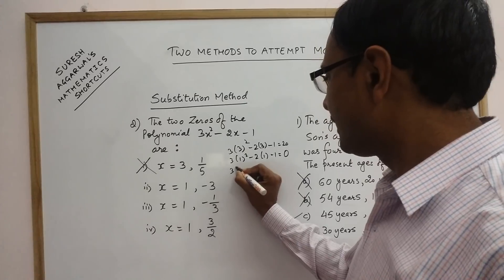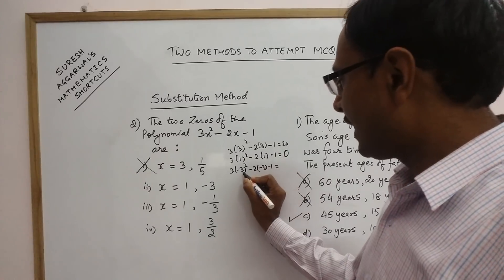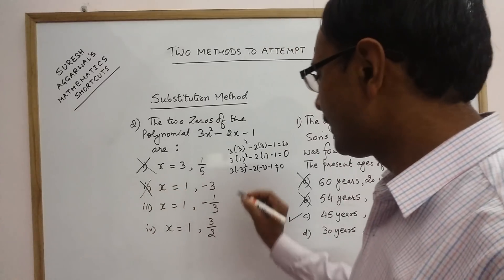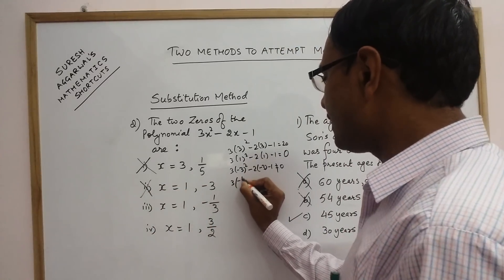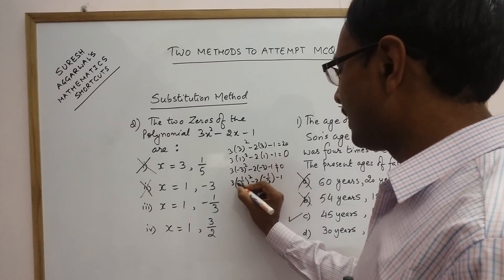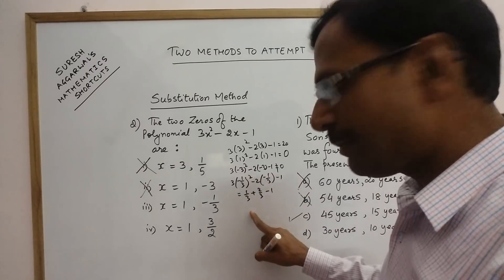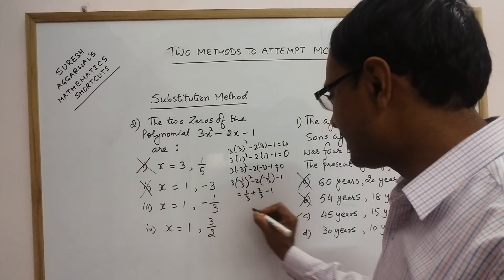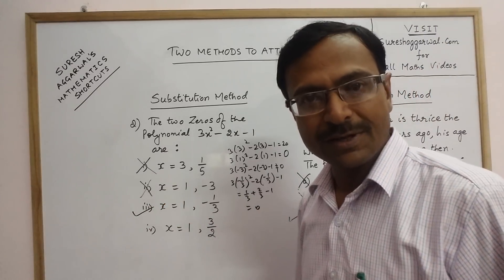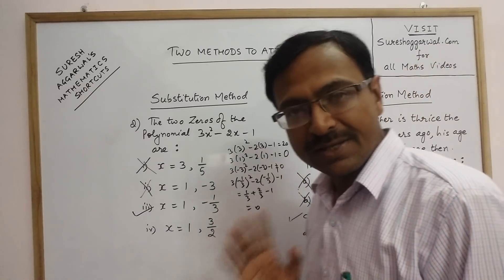Now, let us check minus 3. 3 into minus 3 square minus 2 into minus 3 minus 1. This is 9 threes are 27. Obviously, this will not come out to be 0. So, our second option is also eliminated. Now, check minus 1 by 3. 3 into minus 1 by 3 square minus 2 into minus 1 by 3 minus 1 which is 3 into 1 by 9, 1 by 3 plus 2 by 3 minus 1. So, 1 by 3 plus 2 by 3 it is 1, 1 minus 1 is 0. So, this third part is your final answer because x equal to 1 is a zero and minus 1 by 3 also satisfies this polynomial.